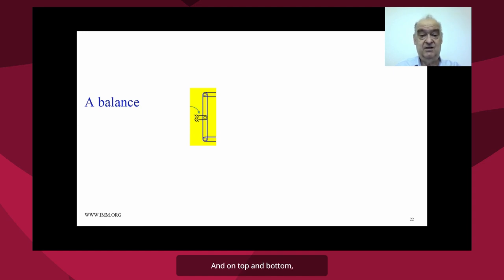And on top and bottom, we have rotary joints connecting to more links that are horizontally placed in this illustration. So now, what happens?